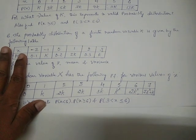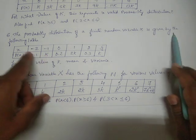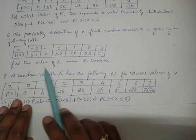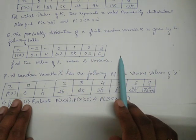Next problem, sixth problem is: the probability distribution of a finite random variable X is given by the following table. Find the value of k. Same thing - addition of all these things must be equal to 1, so find the value of k.